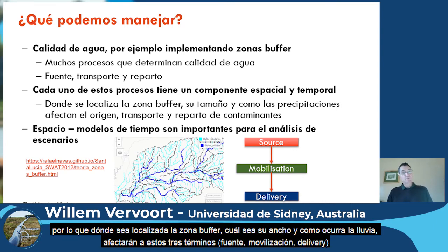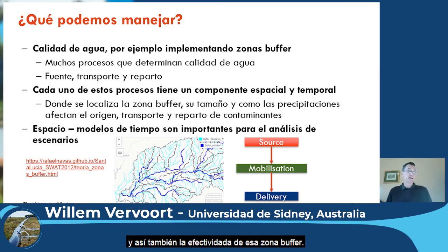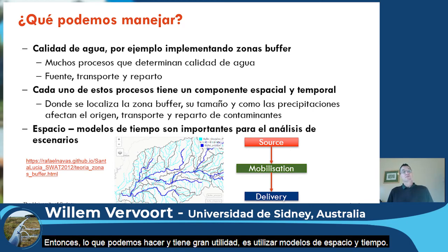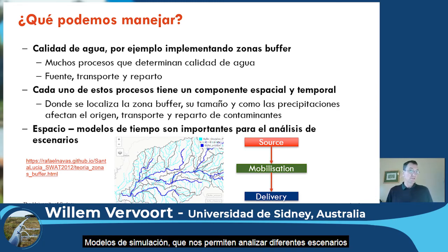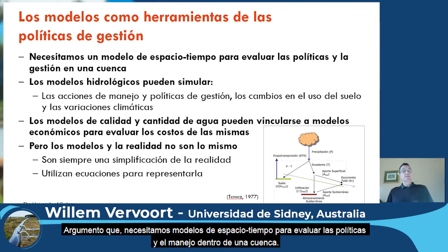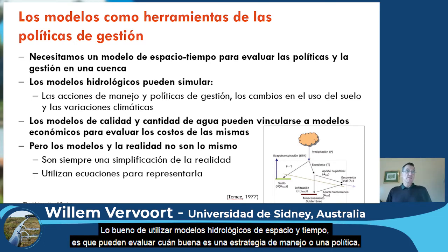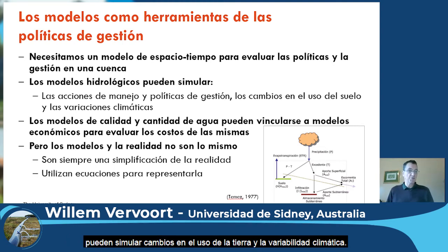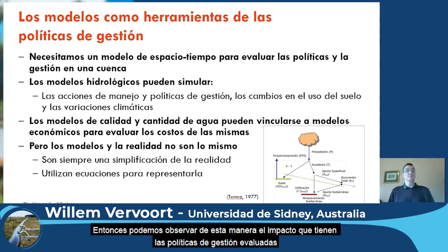So where we place the buffer zone, how wide it actually is, and what the rainfall is will affect those three terms and will affect the effectiveness of the buffer zone. What we actually need — and what is useful here — is space-time models, some simulation models, that allow us to analyze different scenarios. I would argue that we need space-time models to evaluate policy and management within a catchment.